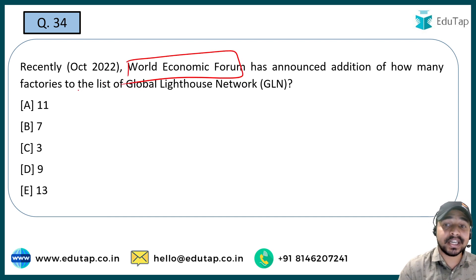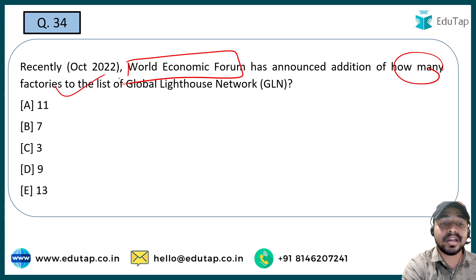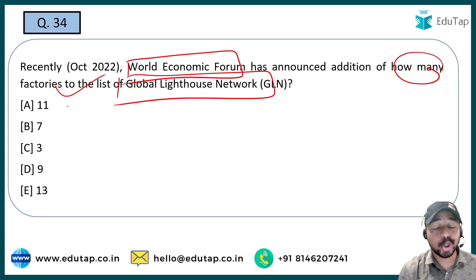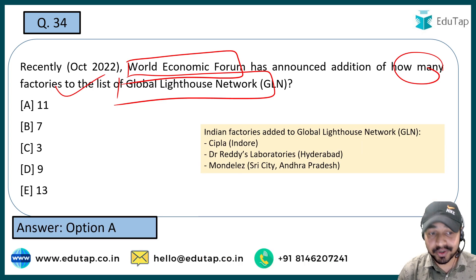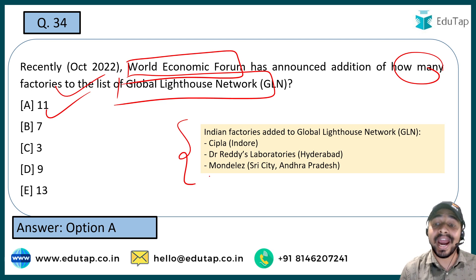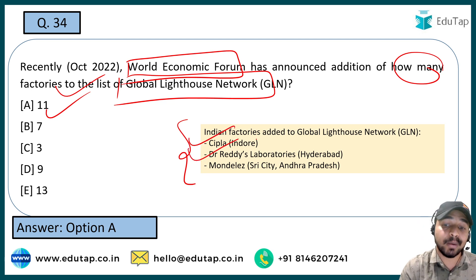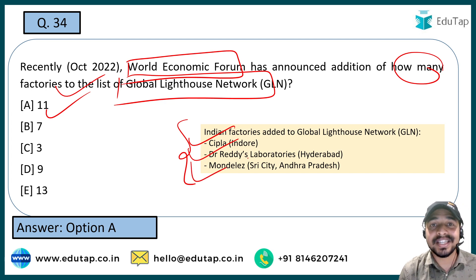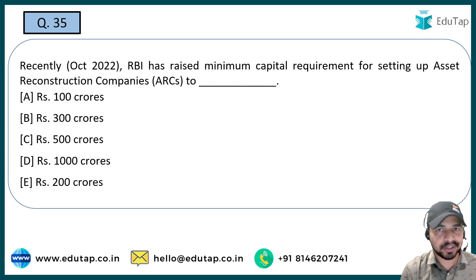The next question: World Economic Forum recently announced the addition of how many factories to the list of the Global Lighthouse Network? The right answer is 11 factories. Among the Indian factories added to the Global Lighthouse Network are Dr. Reddy's Laboratories in Hyderabad and Mondelez in Shree City in Andhra Pradesh. All these are very important to remember.